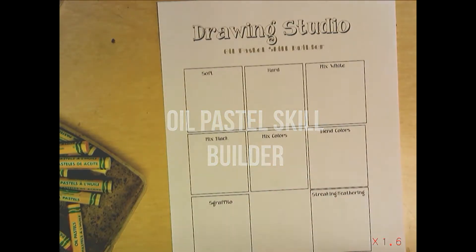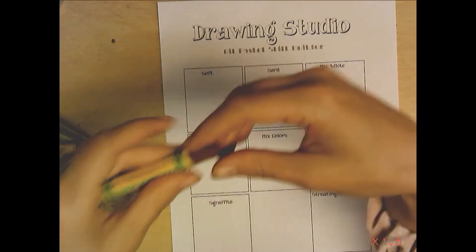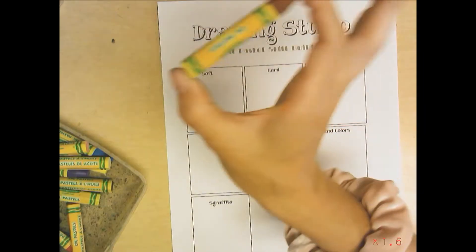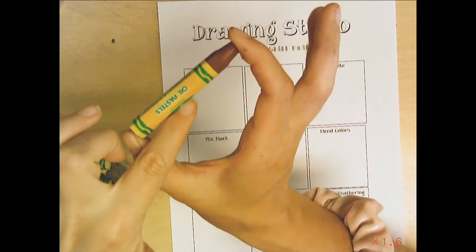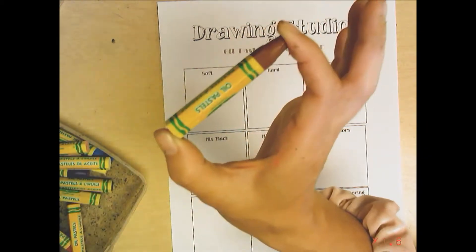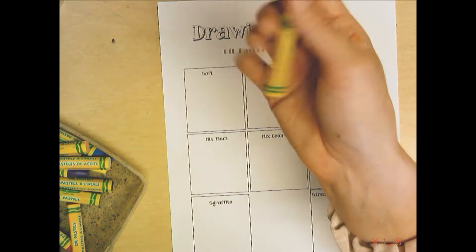We are going to do an oil pastel skill builder. Oil pastels look like this, these are brand new so they have the wrapper on them, but eventually these wrappers kind of peel off so you just have this kind of stump. You can tell oil pastels because they feel a little oily in your hands and they get your hands pretty dirty.